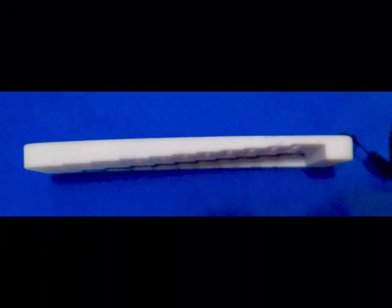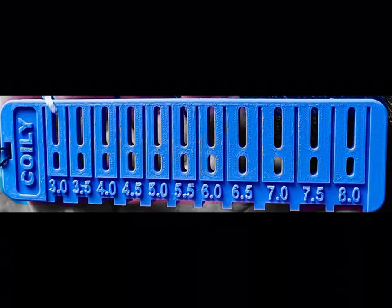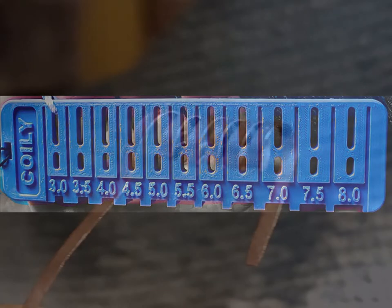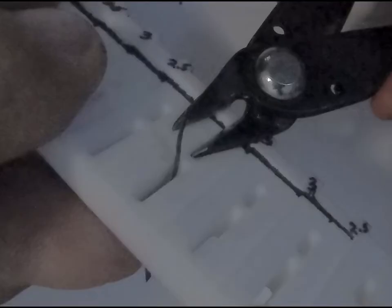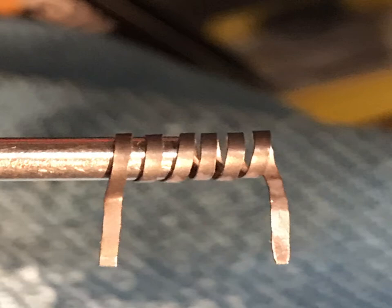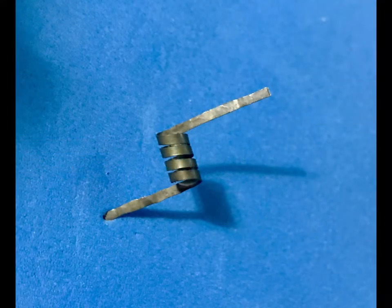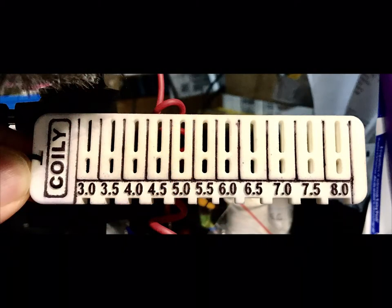Once you've determined the leg length you need, you simply insert the coil legs into the slots associated with the length, hold the base of the coil against the Coily, and trim the excess sticking out the opposite side. The coil legs need not extend from the coil on the same side, as you can simply flip the coil and cut the other leg.